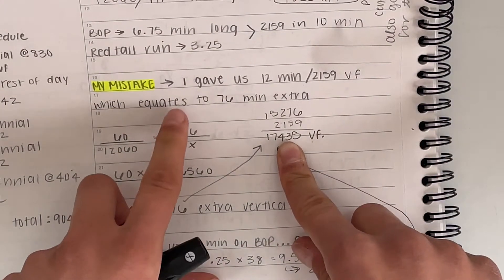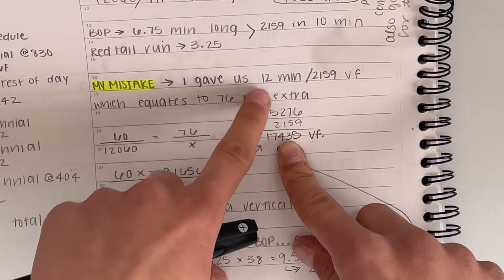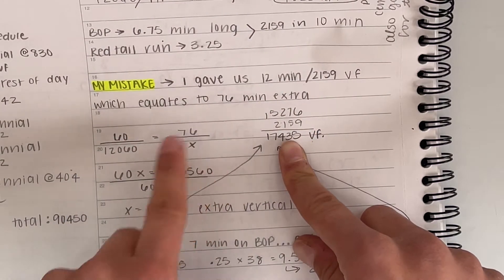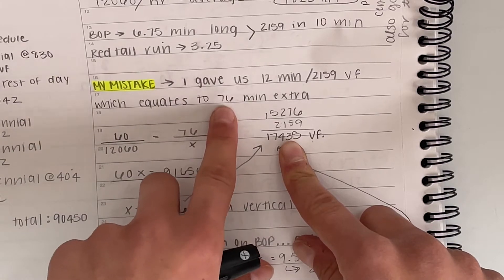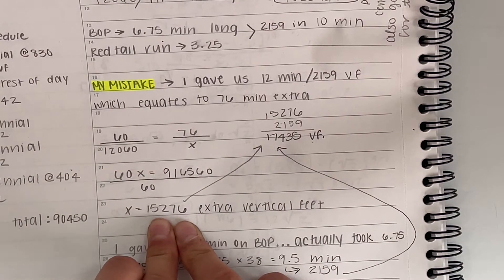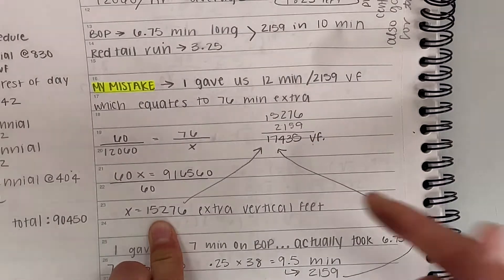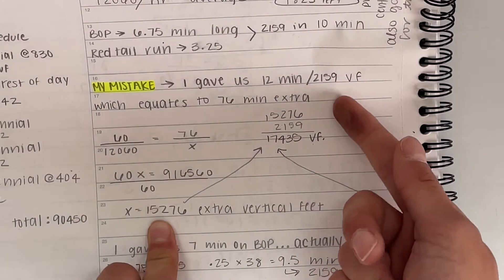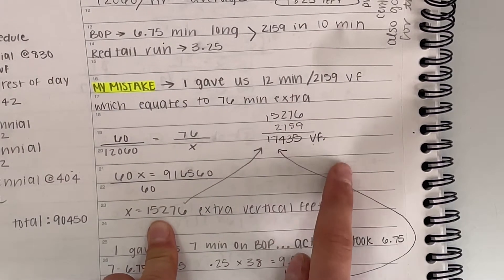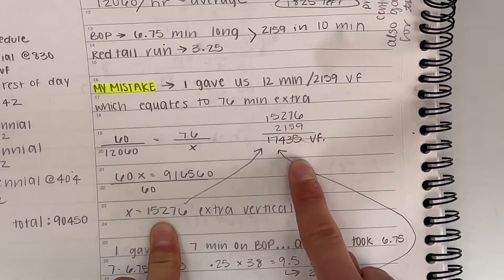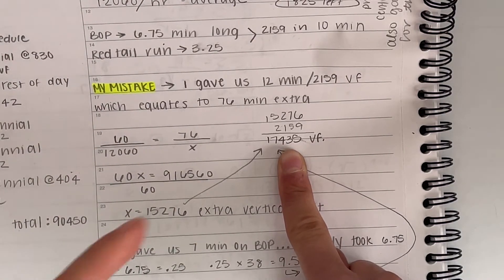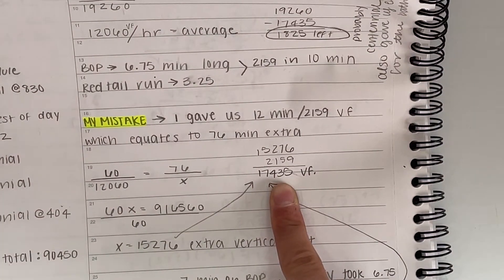So then here I have, I gave us 12 minutes for every 2,159 vertical feet, which actually took 10 minutes, which then when you do the math equates to 76 extra minutes. So you do the math there and you get, that's an extra 15,256 vertical feet, which is what we ended up getting because I messed up the time it took. Then you take up the time I rounded on the lift, you add that together. And that's a total of 17,435 vertical feet that I missed, I messed up on. So that's what we were actually able to get in addition to the 70,000 that I knew we were going to get. So that's basically a mistake I made.